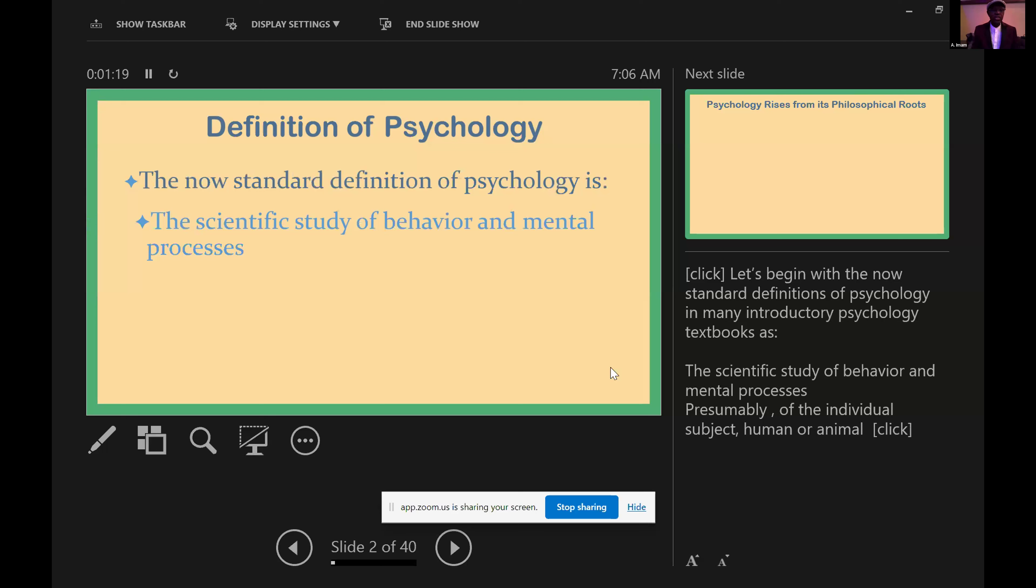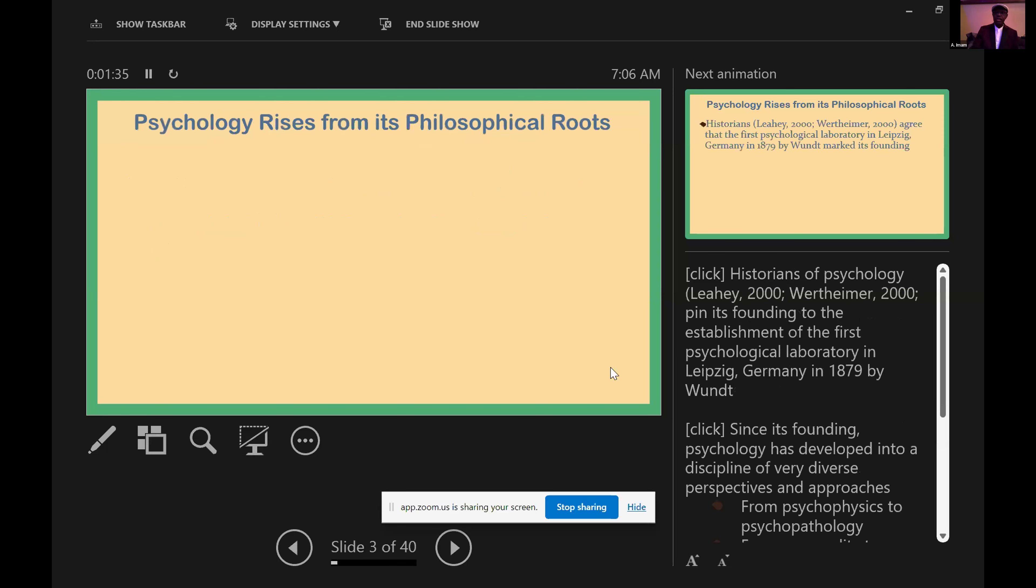First, let's begin with the now standard definition of psychology as the scientific study of behavior and mental processes. This is the typical definition you get in introductory psychology textbooks. Historians of psychology pin its founding to the establishment of the first psychological laboratory in Leipzig, Germany in 1879 by Wundt.